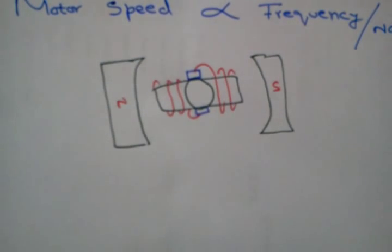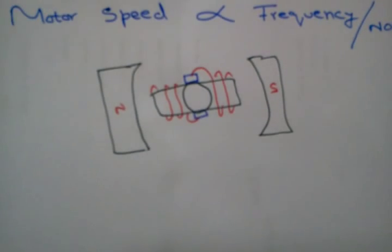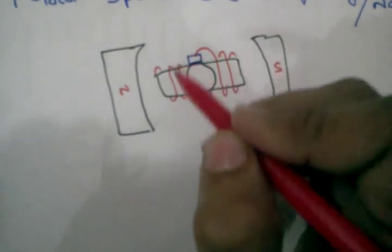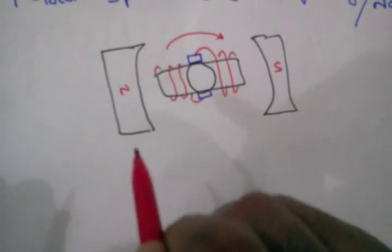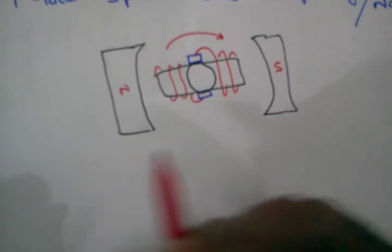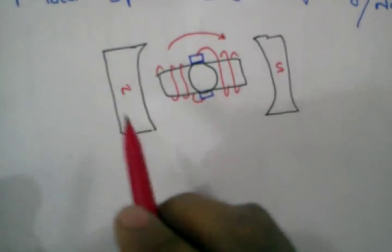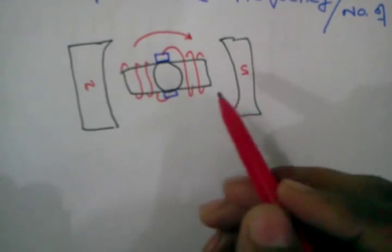So in order to explain this relation, if the motor completes one complete mechanical rotation, how many times will it shift its poles? If there are two poles, then it will shift its poles two times.